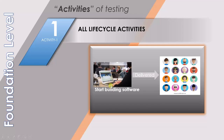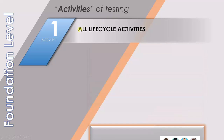This means that when you are developing a software, you will do the testing of the product. But once it gets handed over to the users or customers, the testing won't stop. They will continue with an indirect type of testing, where they will use the product and give the company feedback. If they find a defect during their use, they will contact customer care, and then the product will be sent back and you will have to fix the problem. So as long as the software is in use, it is under testing.